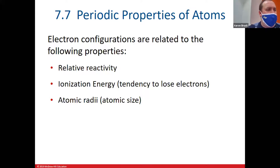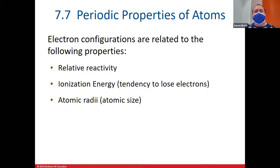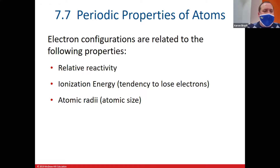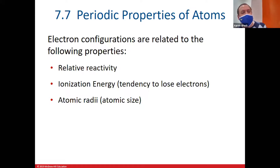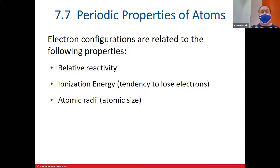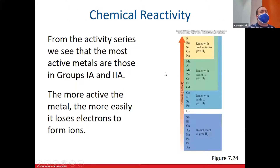We're going to start talking now about some periodic properties, and we'll get into three general ideas: reactivity, ionization energy — which is the tendency of an atom to want to lose electrons — and the third one your book calls atomic radius or atomic radii, which we're just going to call size. How big is the atom, and how can we tell one atom is bigger or smaller than another?